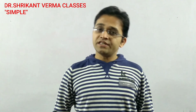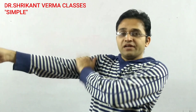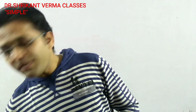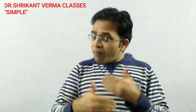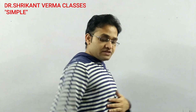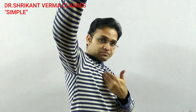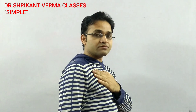Here we are going to start the discussion on the upper limb. The upper limb can be divided into a few parts. The first part of the upper limb, which is in front of the chest, is known as the pectoral region.